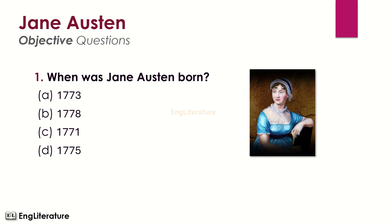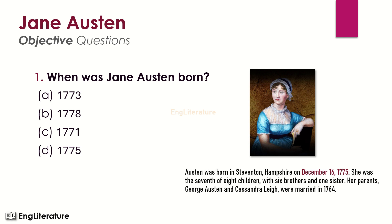When was Jane Austen born? Austen was born in Steventon, Hampshire on December 16, 1775. She was the seventh of eight children with six brothers and one sister. Her parents George Austen and Cassandra Lee were married in 1764. The right choice is number D — Jane Austen was born in the year 1775.